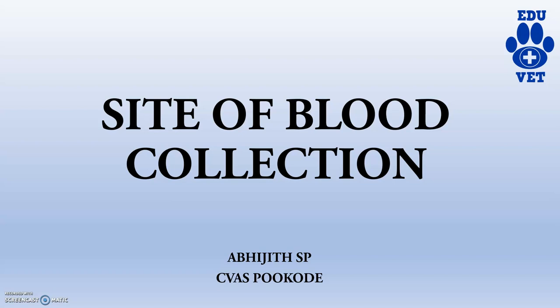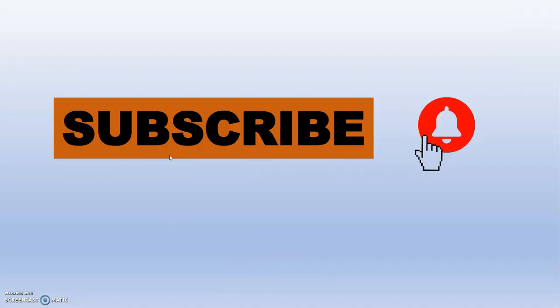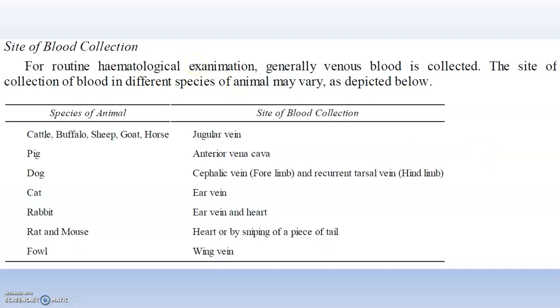We cannot collect blood directly from venipuncture or cardiac puncture in all cases. There are several sites in animal bodies where we can access veins very easily to get blood. For routine hematological examination, generally venous blood is collected. This is actually a list containing the species of animal and the site of blood collection.